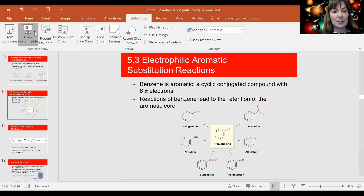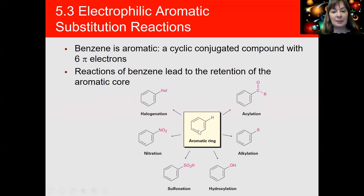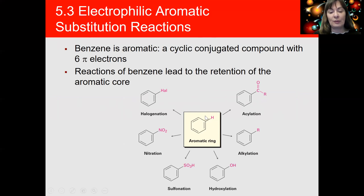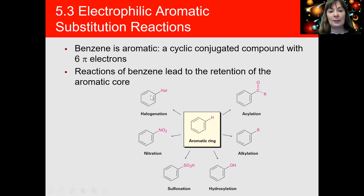We're going to start by addressing section 5.3 in the book, which is Electrophilic Aromatic Substitution Reactions. In all the reactions we're going to cover in this chapter, you will start with a benzene ring — an aromatic ring — and you will take one of the hydrogens of that benzene ring. It doesn't matter which one because all the hydrogens are equivalent, and you will replace or substitute it with something else.